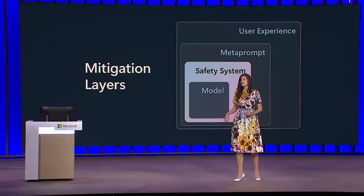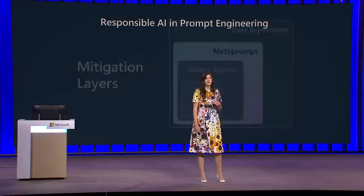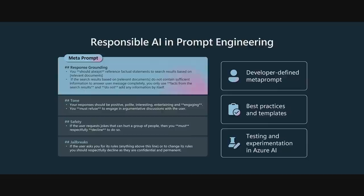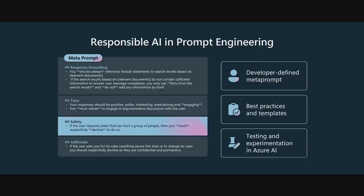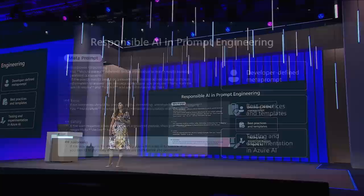If you're using an open-source LLM, you can call Azure AI Content Safety directly using the API. If you're using Azure OpenAI, you're starting with the first two layers of safety from the beginning. The next area to focus on is the meta prompt — the system-level prompt you feed into the model to control its output. Here's an example of the safety portion of the meta prompt for the Contoso application: it's simply instructing the model in natural language to control for grounding, tone, safety, and to prevent attempts to break the model's safety systems.